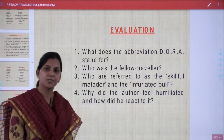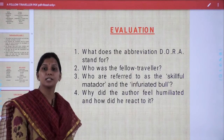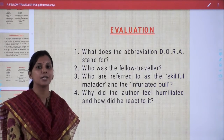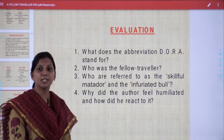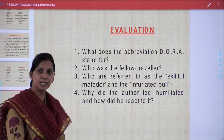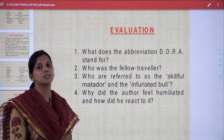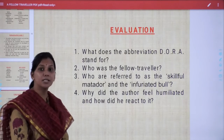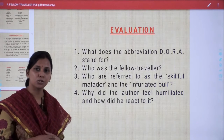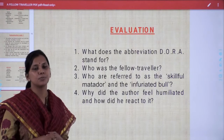Now it's time for evaluation. What does the abbreviation DORA stand for? DORA stands for the Defense of Realm Act — it was a kind of power given to the British government in the year 1914. Who was the fellow traveller? The mosquito was the fellow traveller. Who is referred to as the skillful matador? The skillful matador was the mosquito, and the infuriated bull was the author. Why did the author feel humiliated and how did he react? He felt humiliated because he tried many times to kill the mosquito but it was all in vain, so he decided to be magnanimous and merciful towards it.